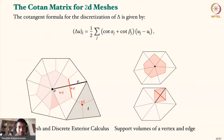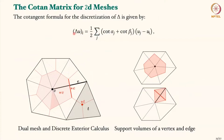This is the famous cotangent formula for the discretization of the Laplacian. If I take this Laplacian and compute it on u, you can think of this as applying the discrete matrix on the discrete vector — this is the i-th component of that vector. I could write it as the Laplace matrix times the u vector, which is the vector of solutions at the vertex points. Looking at its i-th component, I can write it down as this formula — it involves some cotangent.